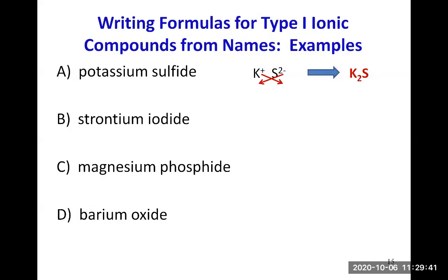Strontium iodide. Strontium has symbol Sr, it's group 2A, an alkaline earth metal, so it always makes a 2+ ion. Iodide is the anion from iodine in group 7A. So 7 minus 8 gives I with a negative 1 charge. You do the crisscross trick and the two from the strontium charge becomes a subscript for iodine, and the one from the iodine charge becomes a subscript for strontium. So SrI₂ is the formula for strontium iodide. You need two iodine ions to get two negative charges to cancel the two positive charges from one strontium.